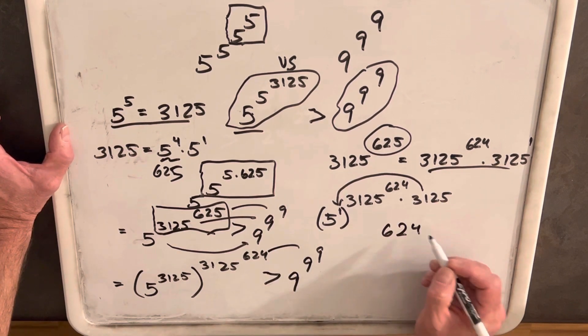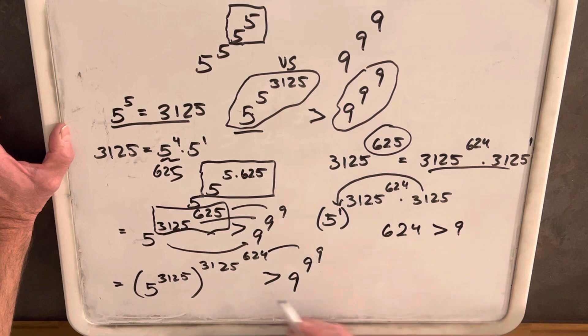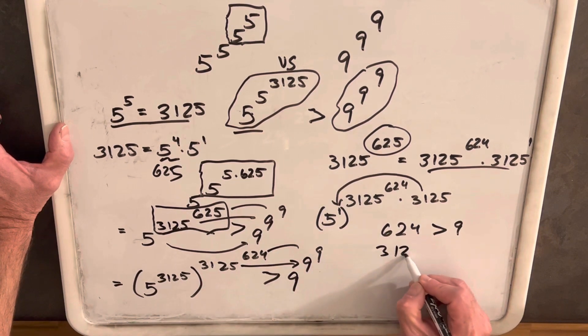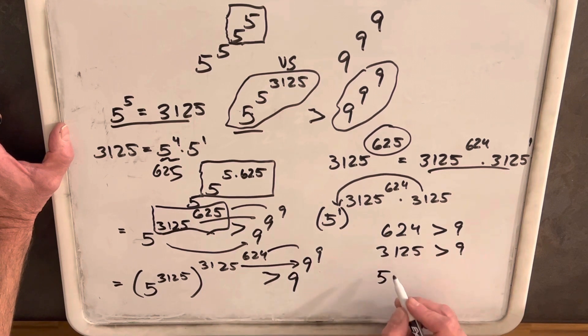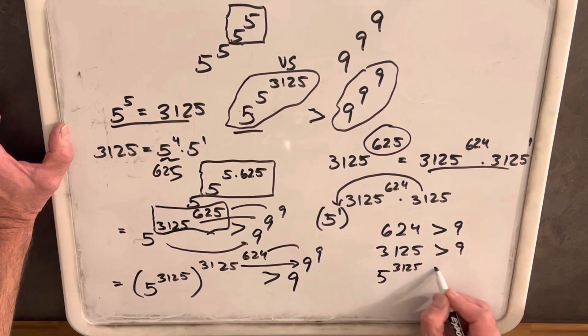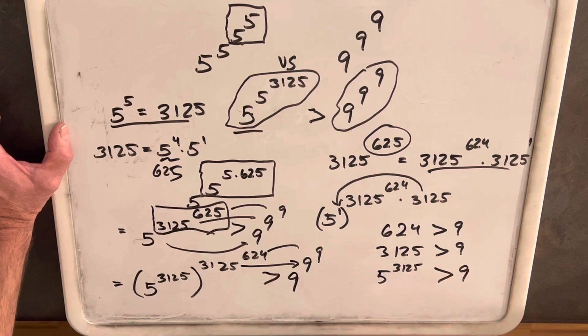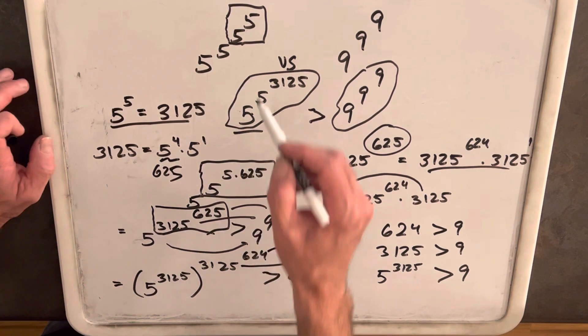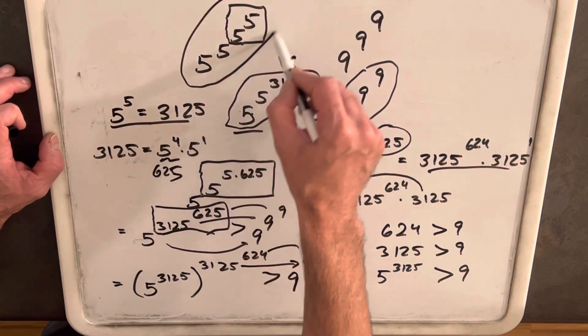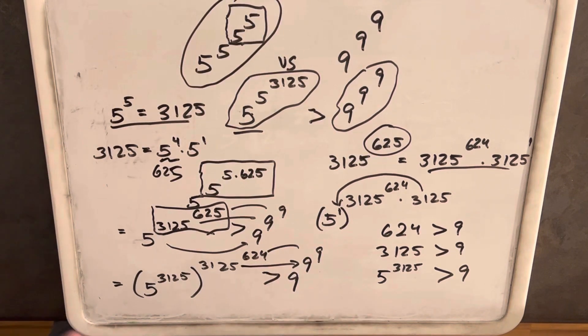And that works because we're clearly now showing 624 is greater than 9, 3,125 is greater than 9, and 5 to the 3,125 is way bigger than 9. So from all of that, I'm going to conclude that 5 to the 5 to the 5 to the 5 is bigger than 9 to the 9 to the 9.